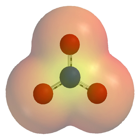An anion, from the Greek word meaning 'up,' is an ion with more electrons than protons, giving it a net negative charge since electrons are negatively charged and protons are positively charged.